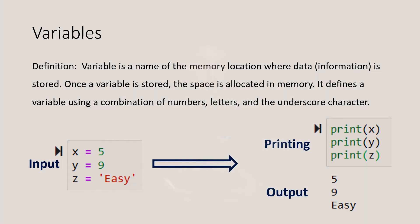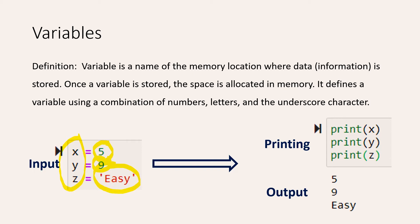Here in our example, we have three different variables or storage units. Each time, one time we store five, one time we store nine, and one time we store the word 'easy' in it. And every time we access the storage unit or variable again, we will every time get the same output.